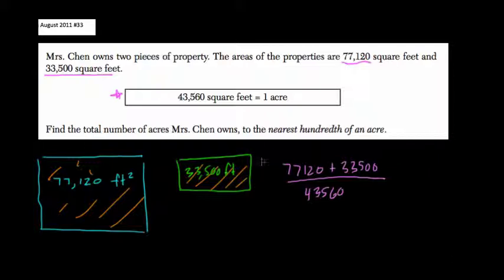If you want to think about it on a simpler level, let's say we have a different conversion where 10 square feet equals one acre. Let's just pretend that for a moment. If you had a property with 20 square feet, how many acres would you have? Well, if 10 square feet is one acre, 20 square feet would be double that, or two acres.